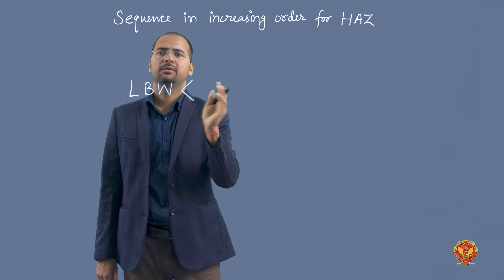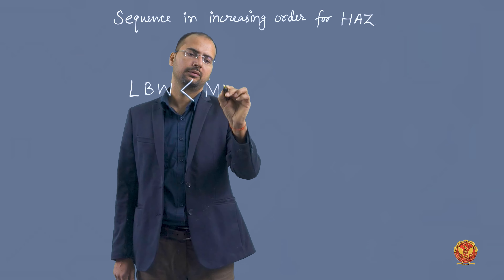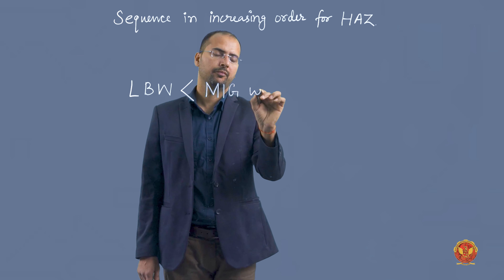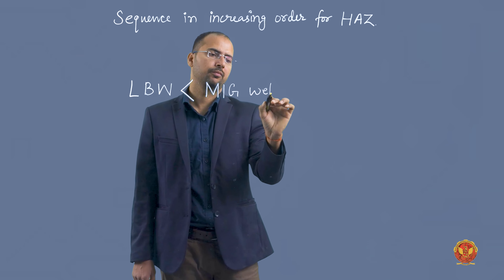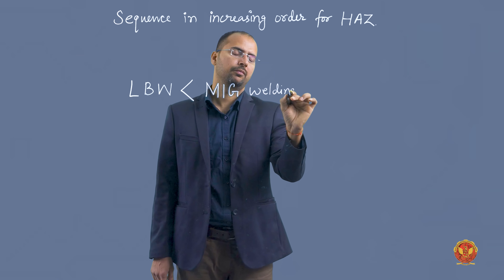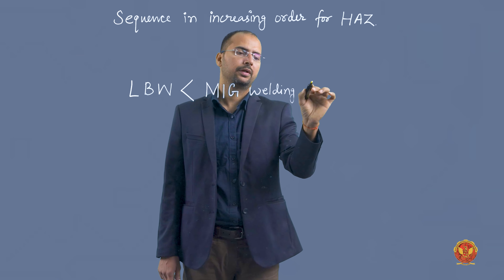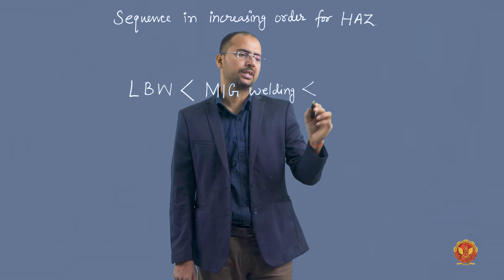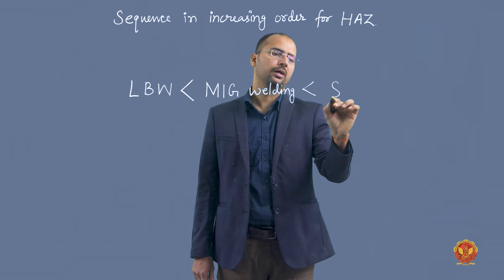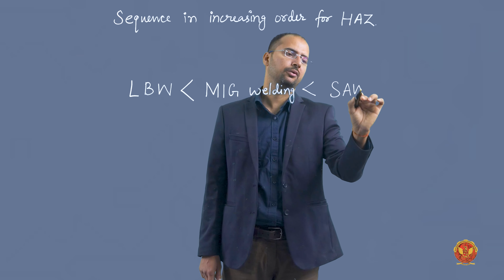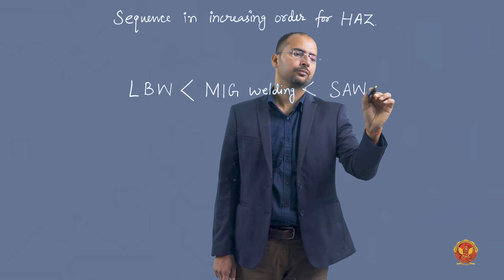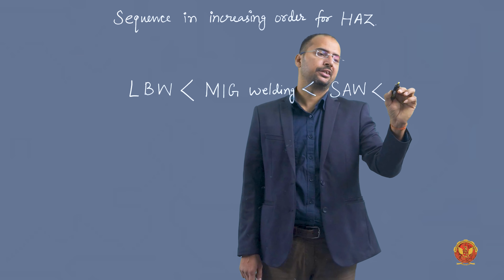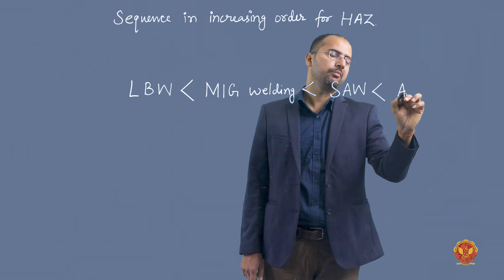इसके बाद MIG welding का होगा, फिर submerged arc welding का, और सबसे ज्यादा heat affected zone arc welding में होगा। So the increasing order of heat affected zone is: laser beam welding → MIG welding → submerged arc welding → arc welding.